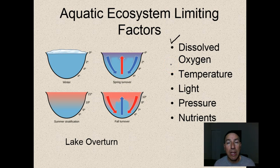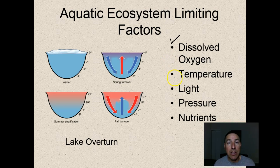Temperature is another major limiting factor. As you go deeper in water it gets colder, and water is most dense at 4 degrees Celsius. When water gets colder than 4 degrees Celsius it starts to rise again. Light is also an important limiting factor - in order to have photosynthesis you must have light, and in order to have primary productivity you must have photosynthesis. Without light there is no primary productivity, which is a huge problem in open water bodies far from land and nutrients.